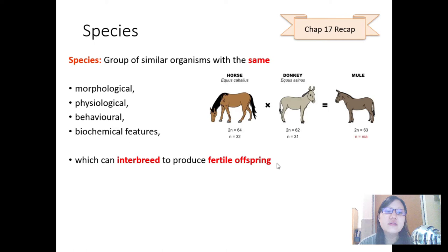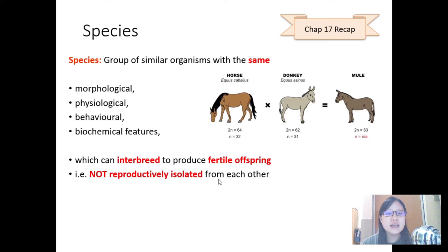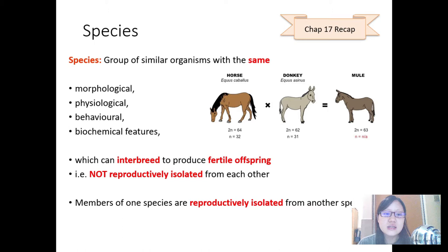Members of the same species are said to be not reproductively isolated from each other, but if two individuals are indeed of different species, then this means that they are reproductively isolated from the other. I hope you have this ingrained in your head already. If you don't, just repeat it a few more times to yourself. So that's species.